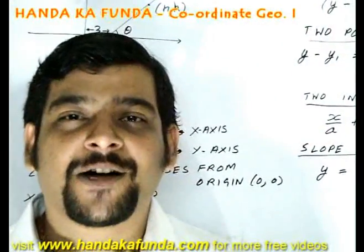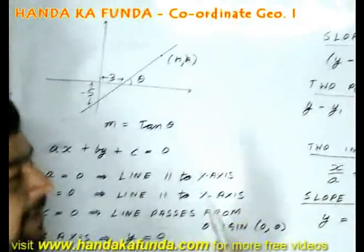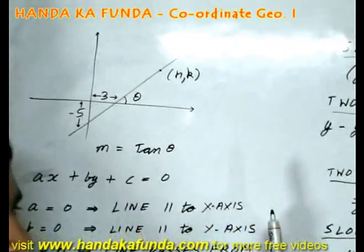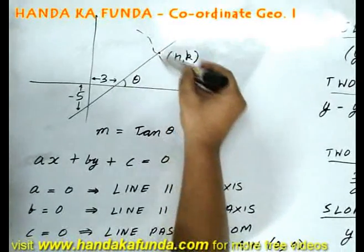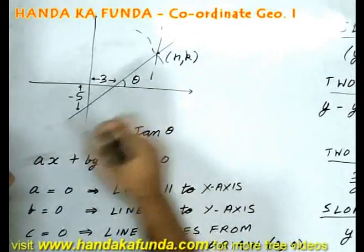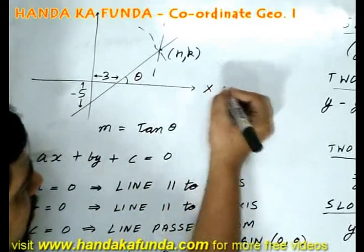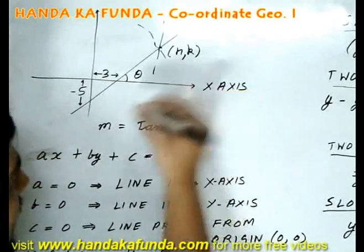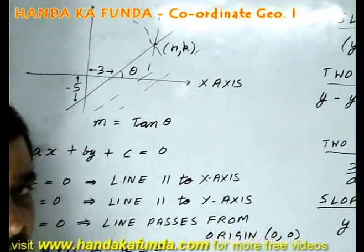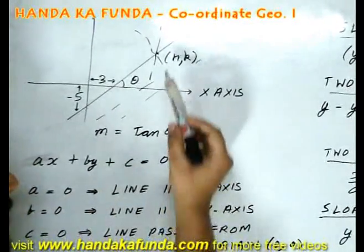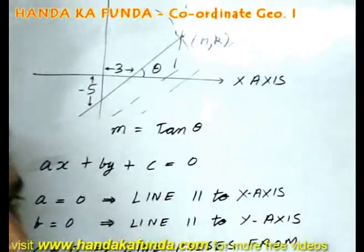Let us look at the funda of a line in case of coordinate geometry. Say, this is the line which is given to me. It passes from (h, k). How many lines will pass from (h, k)? There will be infinitely many lines that will pass from (h, k), but I am considering just one of them. This line makes an angle theta with the positive direction of the x-axis. This line and any line parallel to it will make an angle theta with the positive direction of the x-axis. But there is only one line which passes through (h, k) and makes theta with the x-axis, and that is the line that we have considered.